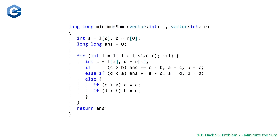Here's our function minimum_sum. It takes as parameters a vector of integers l and r representing our ranges, and it returns a long long representing the minimum sum achievable. We declare a and b: a is the lower end of our current range and b is the upper end, initialized to the values at the beginning of both vectors. We initialize our answer as a long long equal to zero, then enter a for loop starting at the second element (i = 1) looping to the end. We declare locals c and d equal to the lower and upper ends of the next range.